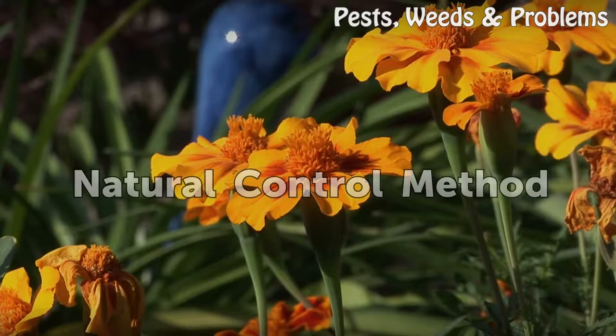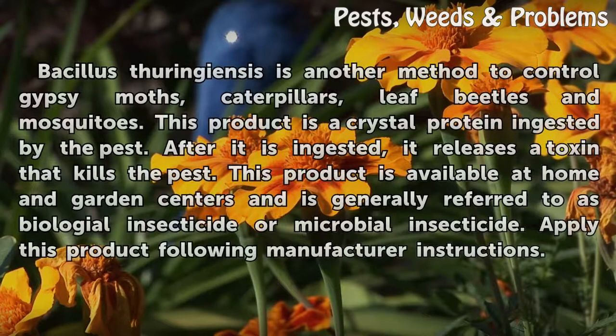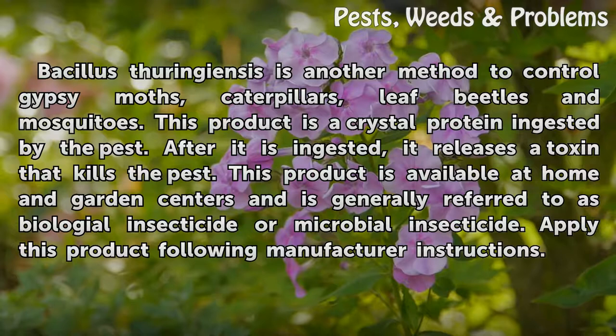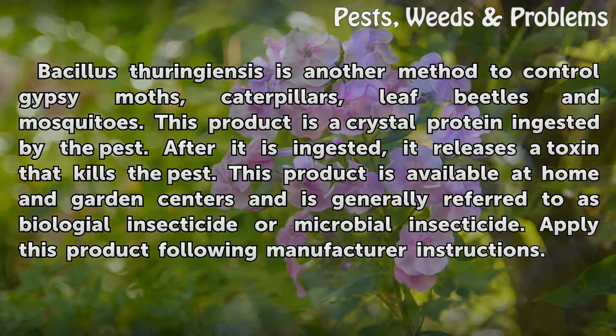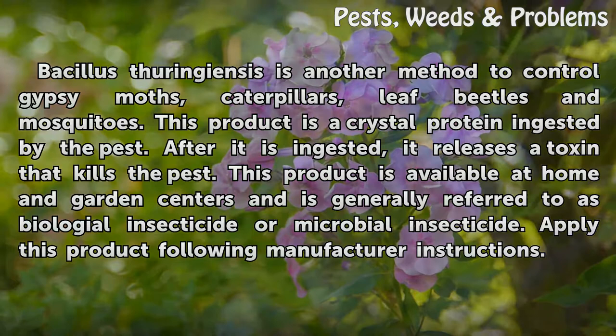Bacillus thuringiensis is another method to control gypsy moth caterpillars, leaf beetles, and mosquitoes. This product is a crystal protein ingested by the pest. After it is ingested, it releases a toxin that kills the pest. This product is available at home and garden centers and is generally referred to as a biological insecticide or microbial insecticide. Apply this product following manufacturer instructions.